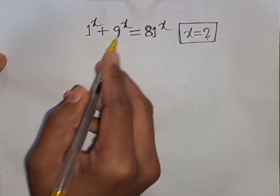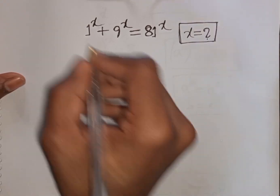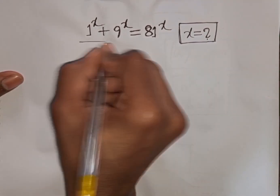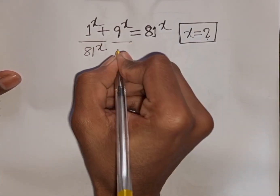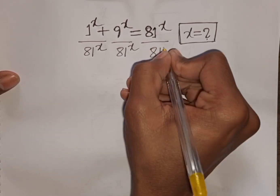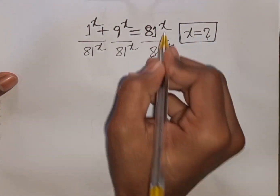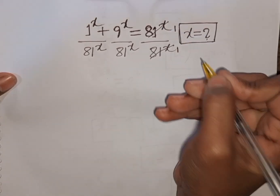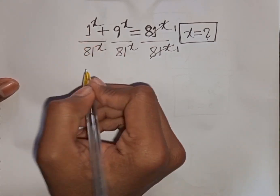Given: 1^x + 9^x = 81^x. Find the value of x. First, divide both sides by 81^x. Now we see the 81^x terms will be cancelled. We have x in the same power but different bases.